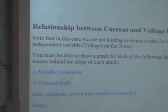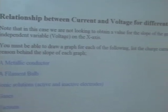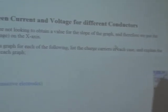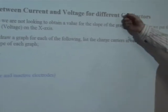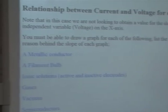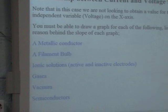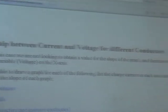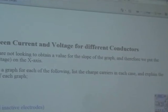The question you could get on an exam is be asked to draw the graph for any type of conductor and be asked to state what the charge carriers are. So what I have done here, you're given a set number of conductors: metallic, filament bulb, ionic, gases, vacuum, and semiconductors.